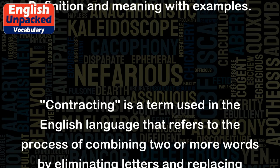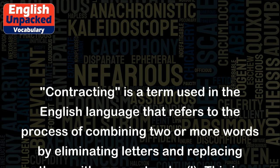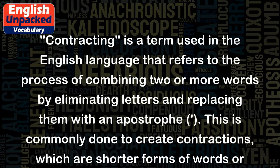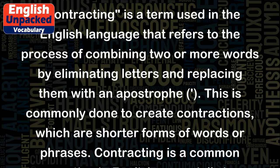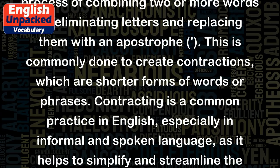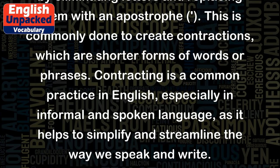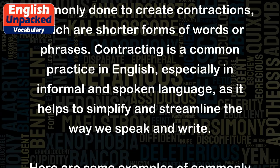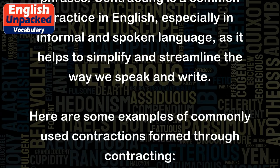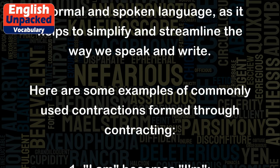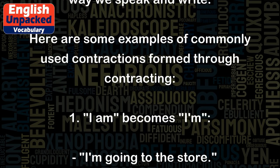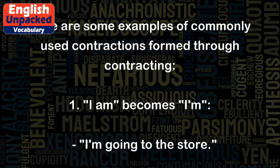Contracting is a term used in the English language that refers to the process of combining two or more words by eliminating letters and replacing them with an apostrophe. This is commonly done to create contractions, which are shorter forms of words or phrases. Contracting is a common practice in English, especially in informal and spoken language, as it helps to simplify and streamline the way we speak and write.